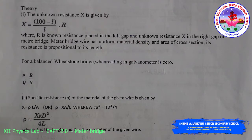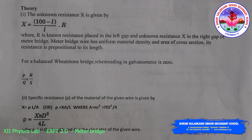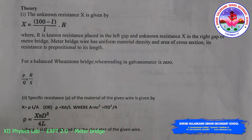For a balanced Wheatstone bridge, when the reading on the galvanometer is zero — that is, null deflection — as per the theory, P/Q = R/S. To determine the specific resistance, that is resistivity ρ of the material of the given wire: X = ρL/A and ρ = XA/L, where A = πr² or πD²/4. So the formula becomes ρ = XπD² / (4L), where L is the length and D is the diameter of the given wire.